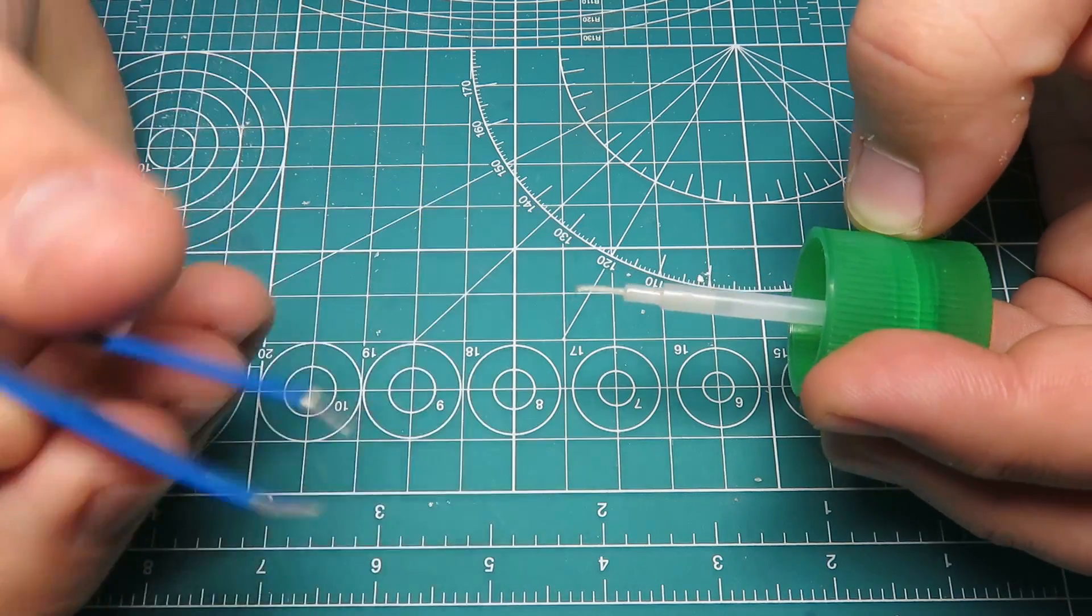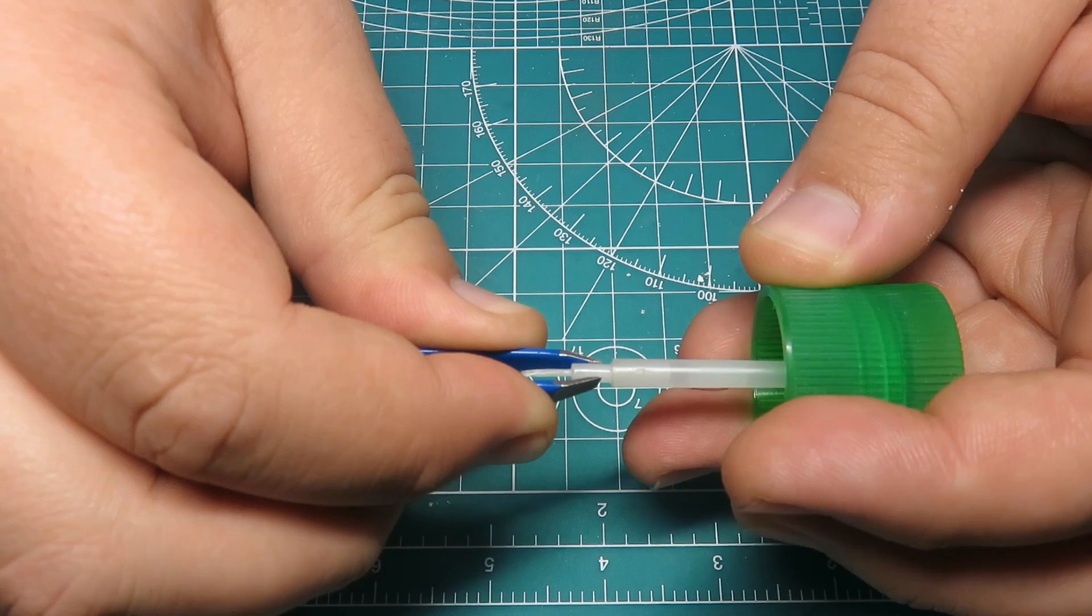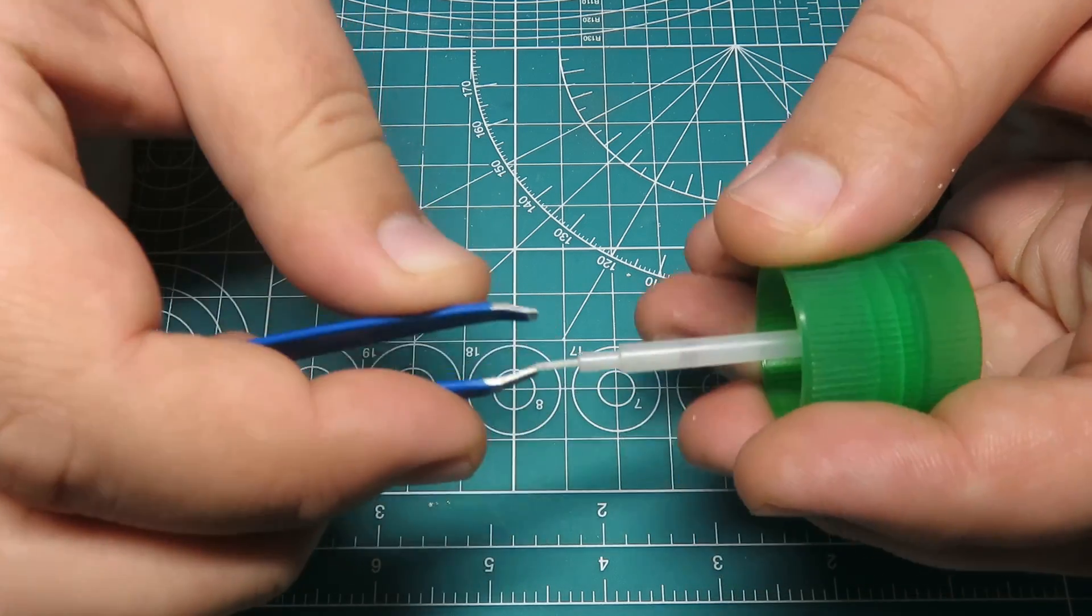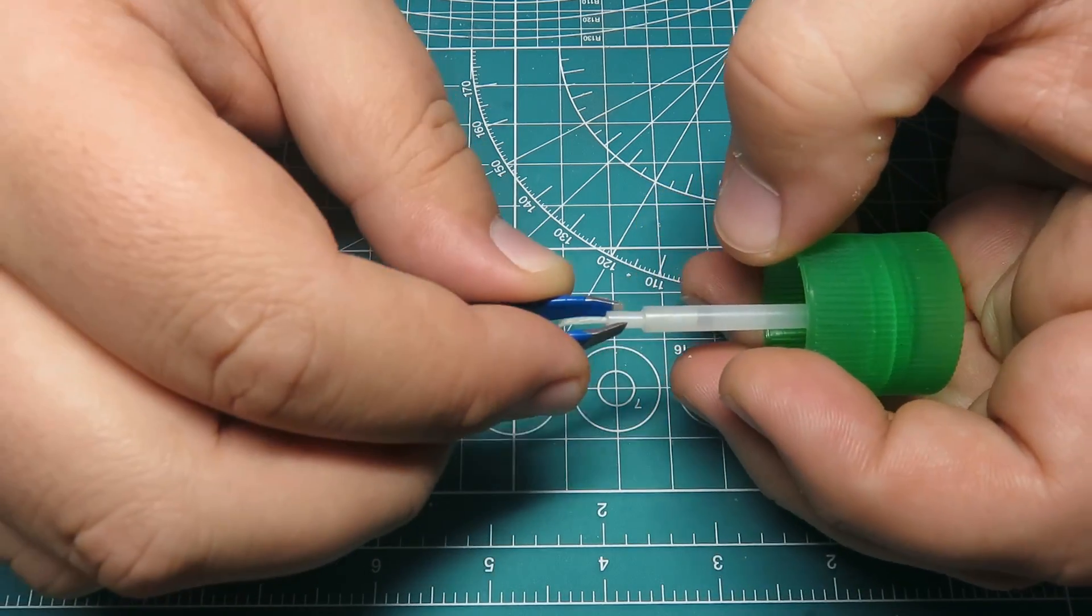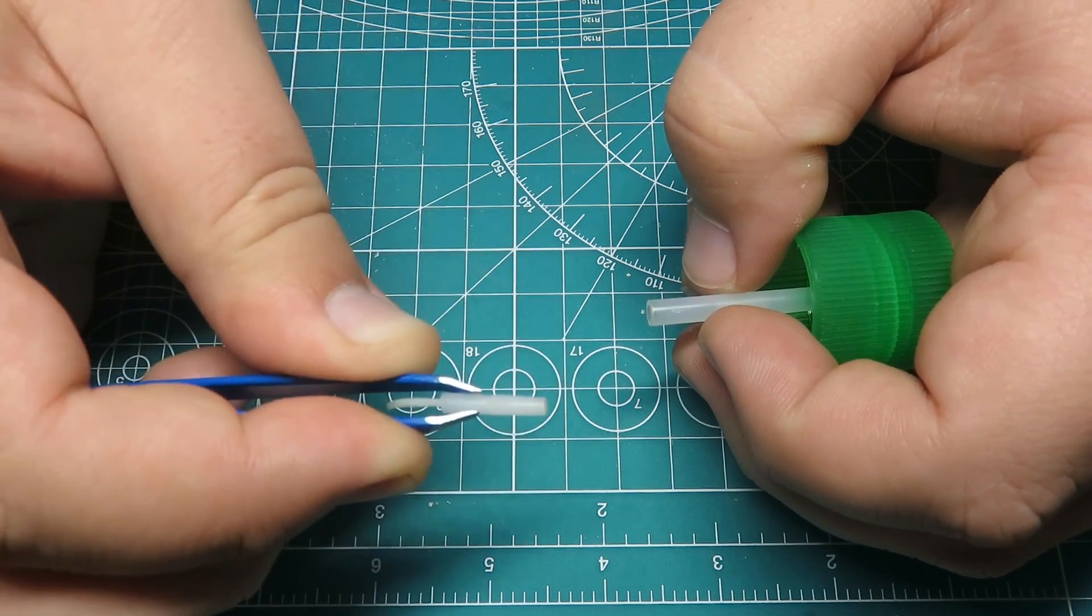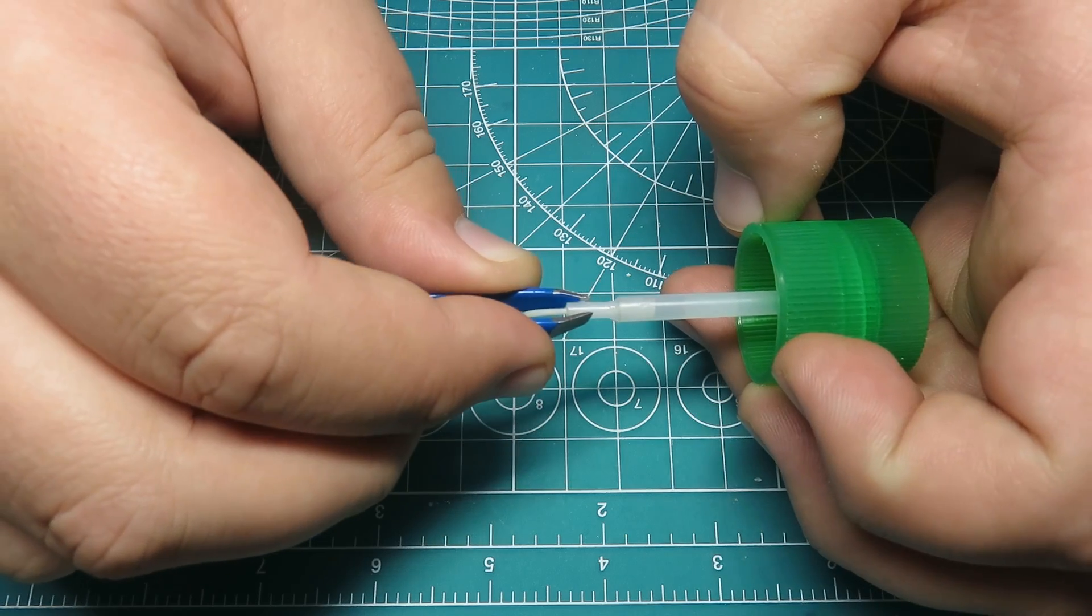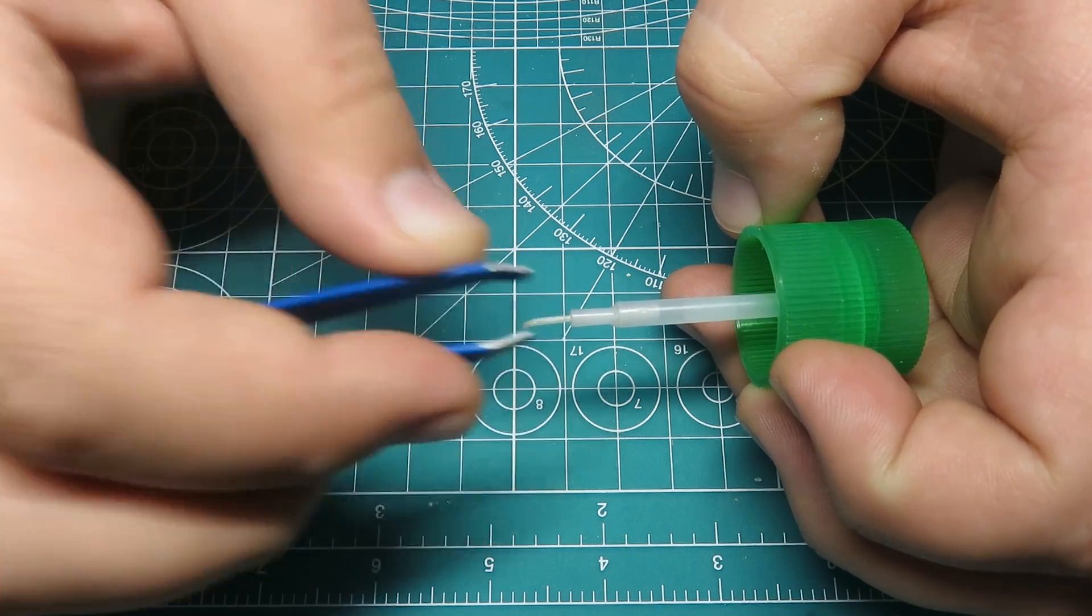You're going to get some tweezers or pliers, depends on you. And all you're going to do is grab this second smaller shaft here and you're going to pull it out. And you can see it comes out completely. So we're just going to put it back about like that.